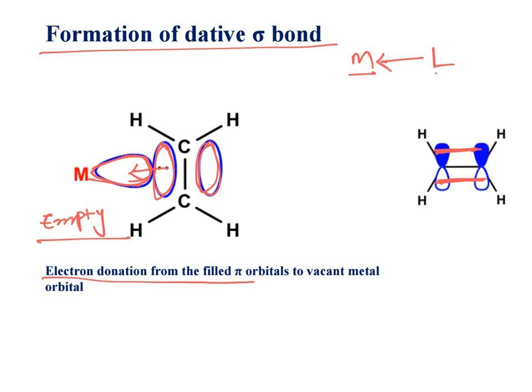Electron donation from the filled pi orbital to vacant metal orbital forms sigma bond. Let's move on to pi backbonding.